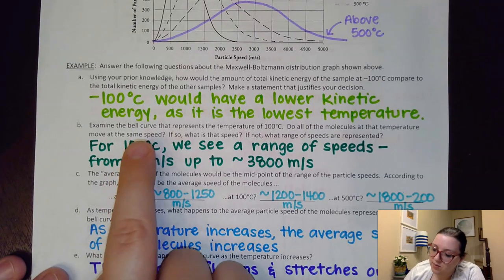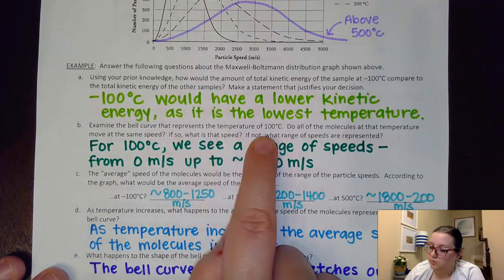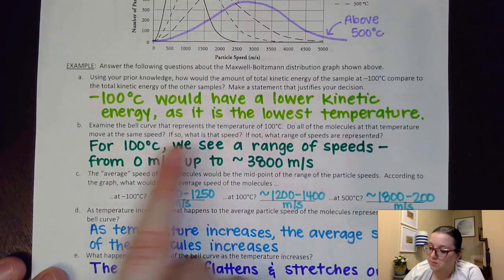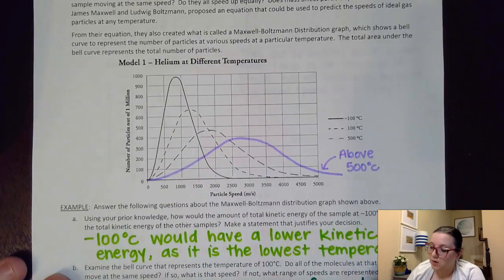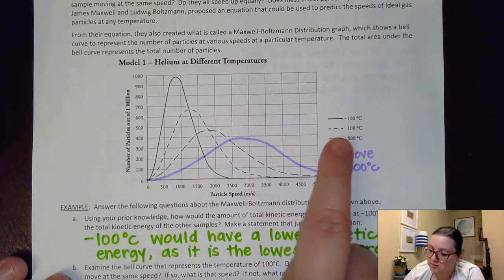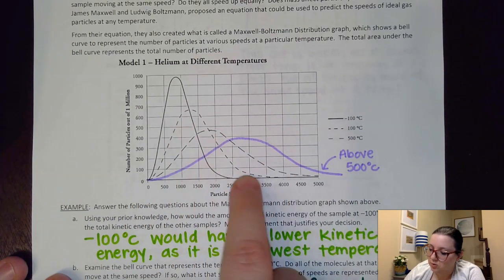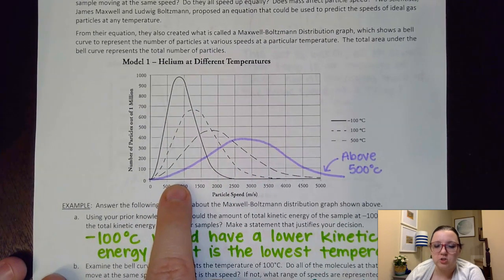So then it said examine the bell curve that represents the temperature of 100 degrees Celsius. Do all of the molecules at that temperature move at the same speed? So I go up here and look and I say okay well the curve at 100 degrees Celsius was this middle curve here that had the shorter dashes to it.